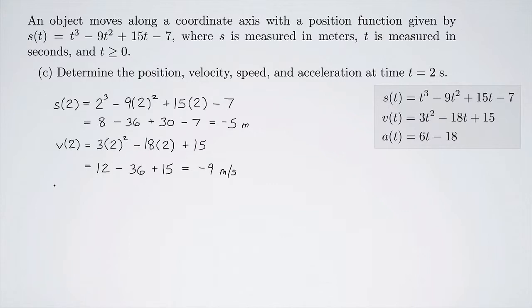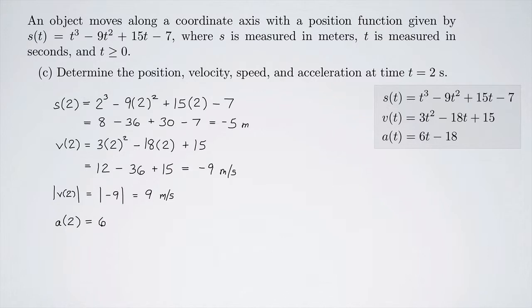Now we want the speed at t equals 2. To get the speed, we take the absolute value of the velocity at 2, which is the absolute value of negative 9, giving positive 9 meters per second. Finally, the acceleration at 2 is a of 2 equals 6 times 2 minus 18, which is 12 minus 18, equaling negative 6 meters per second squared.